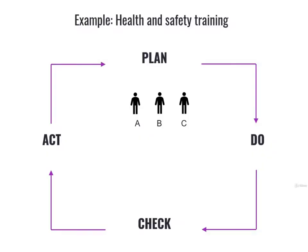In this chapter, we will pick this process: the training of the company's workers regarding the contents of the organization's health and safety procedures. It's a relatively simple process, and at the same time, it's a very important part of the OHS system. Let's see how this process could be done through the PDCA cycle.